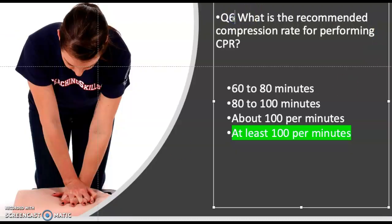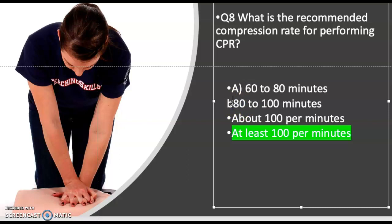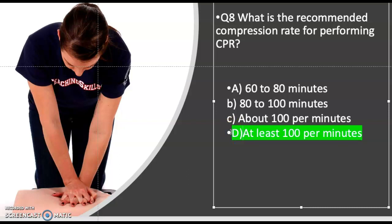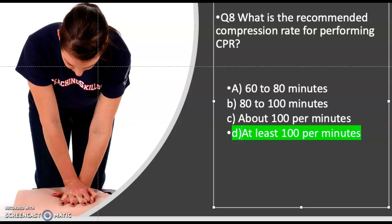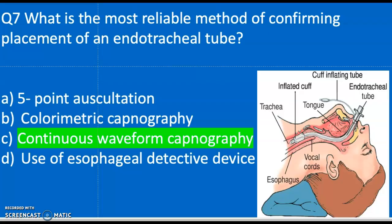Question eight: What is the recommended compression rate for performing CPR? The correct answer is D — at least 100 per minute.